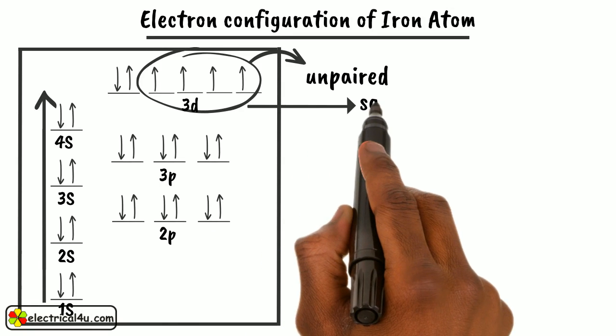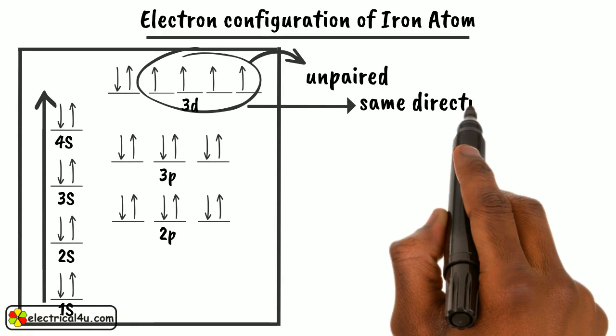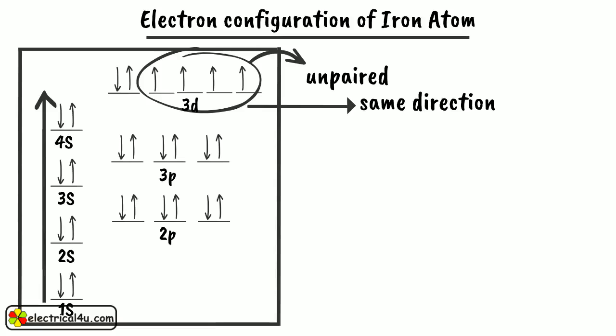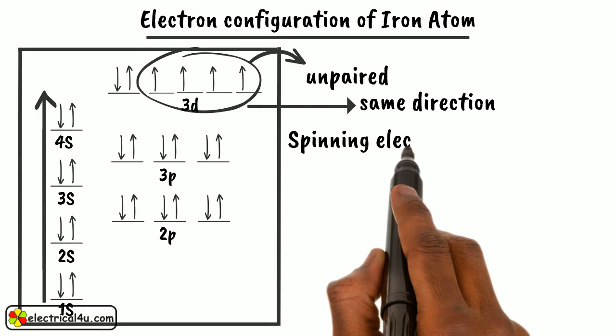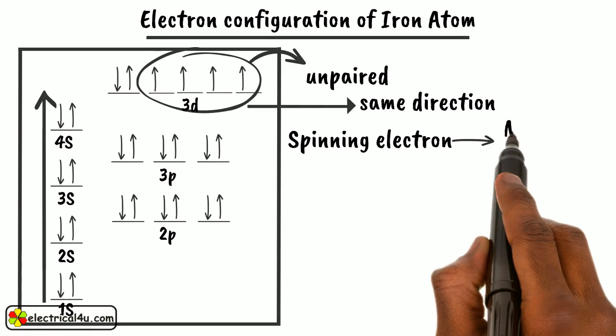Also, we can see these 4 electrons spin in the same direction. Each spinning electron has a magnetic effect since it is rotation of electric charge.